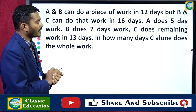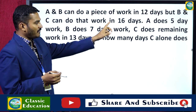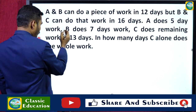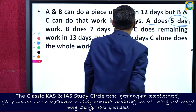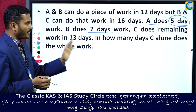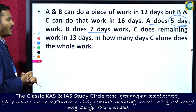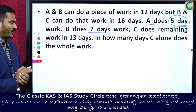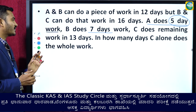Let us solve this question. A and B can do a work in 12 days, but B and C can do it in 16 days. A does 5 days of work, then B does 7 days of work, and C does the remaining work in 13 days. In how many days does C alone do the whole work?